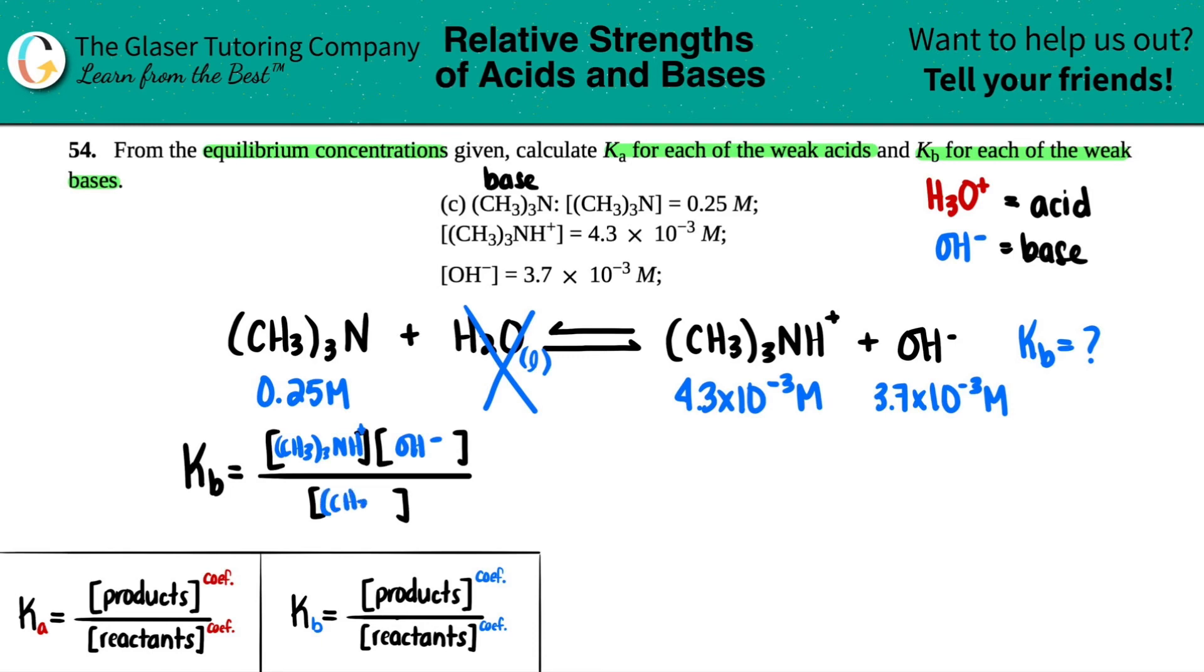Let's plug in those numbers. Kb equals 4.3 times 10 to the negative third times 3.7 times 10 to the negative third divided by 0.25. Let's put this all in the calculator: 4.3 times 10 to the negative third times 3.7 times 10 to the negative third divided by 0.25. Two sig figs for this one. We get 6.4 times 10 to the negative fifth, and that's it.